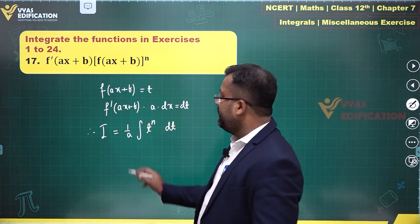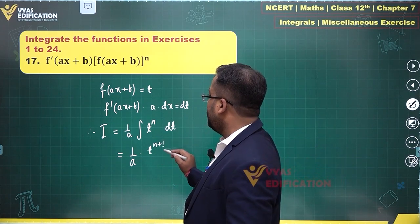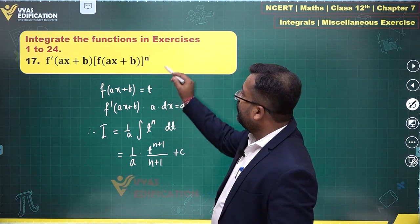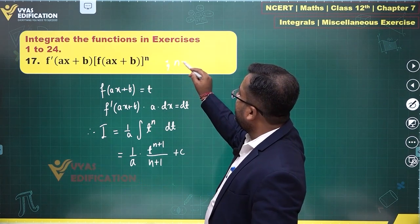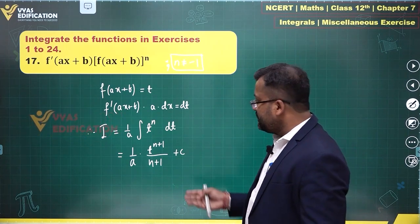And the integral will be t power n plus 1 upon n plus 1 plus a constant. Although a condition should have been given that n is not equal to minus 1. Had n been equal to minus 1,